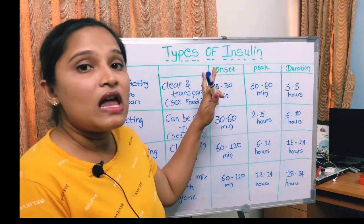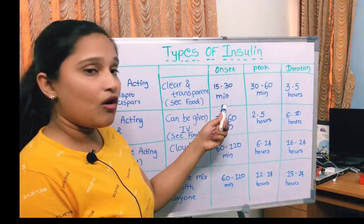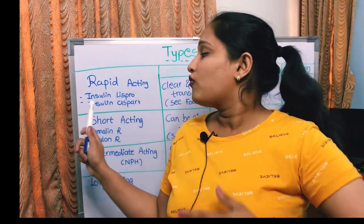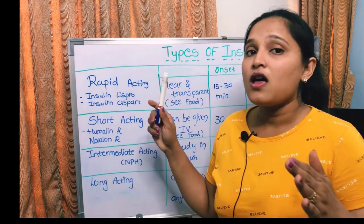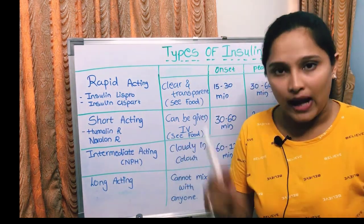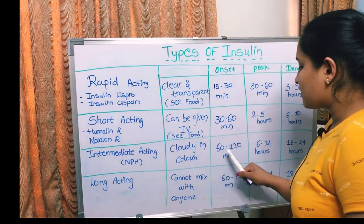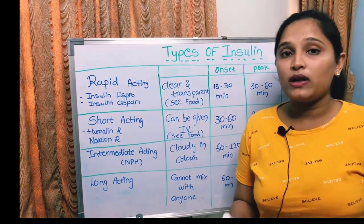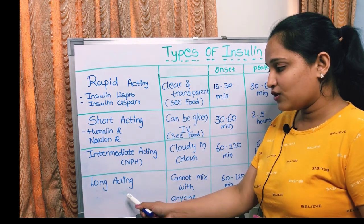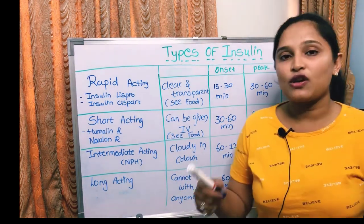The onset effect for rapid acting insulins starts within 15 to 30 minutes of injection. For short acting insulins, the effect starts within 30 to 60 minutes of administration. For intermediate acting insulins, the effect starts within 60 to 120 minutes, and for long acting insulin the effect also starts within 60 to 120 minutes of administration.